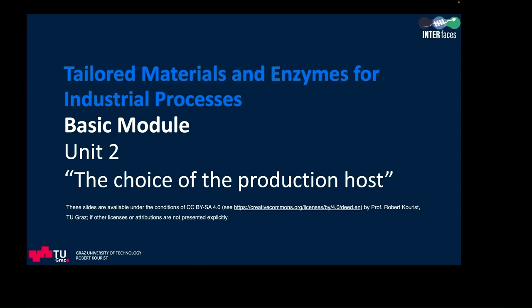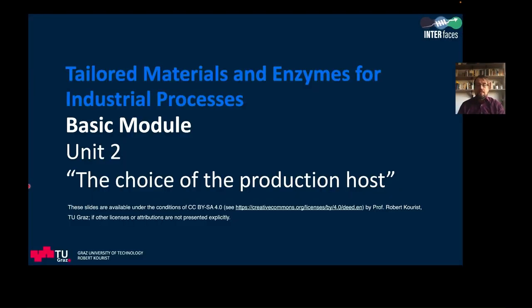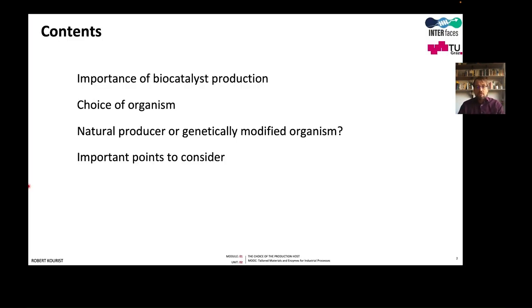Hello and welcome to the MOOC on tailored material and enzymes for industrial processes. My name is Robert Kuhlis. In the second unit of the basic module, I would like to talk about the choice of the production host. In the last video I discussed what an enzyme is and what properties a successful enzyme needs to be applied in a process. Today I want to talk about the importance of biocatalysis production, the choice of organisms, and whether to use the natural producer or a genetically modified organism.